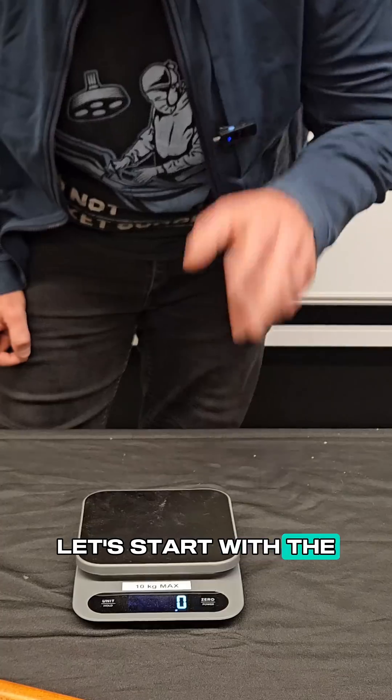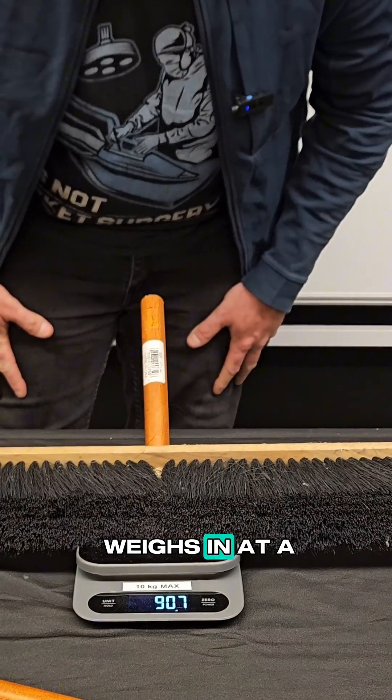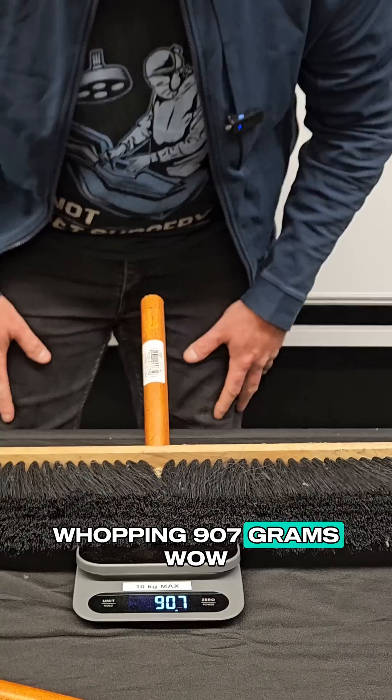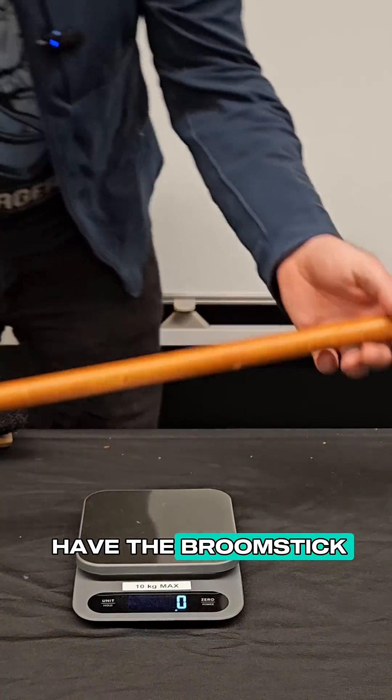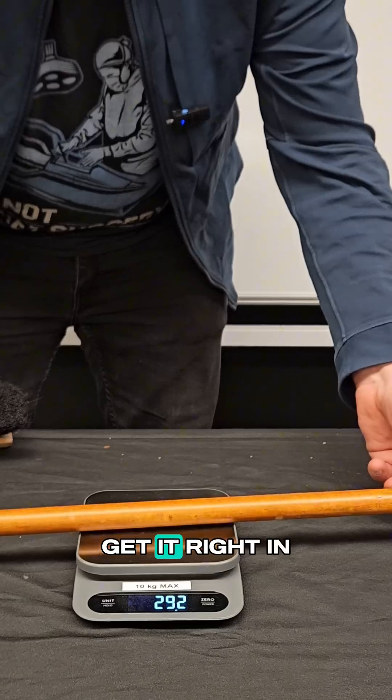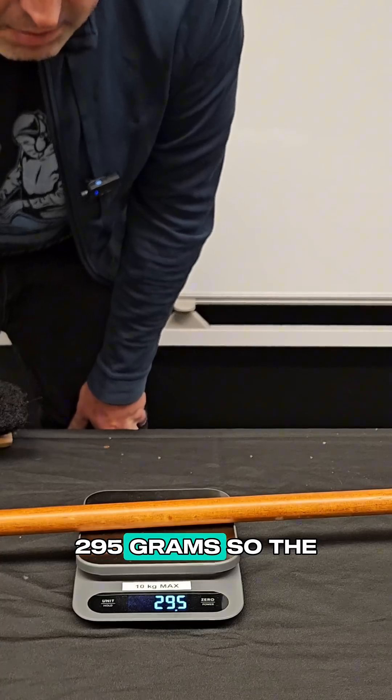Okay, let's start with the broom head first. Here we go. And now this one weighs in at a whopping 907 grams. Wow. Okay, next up we have the broomstick. Get it right in the center. 295 grams.